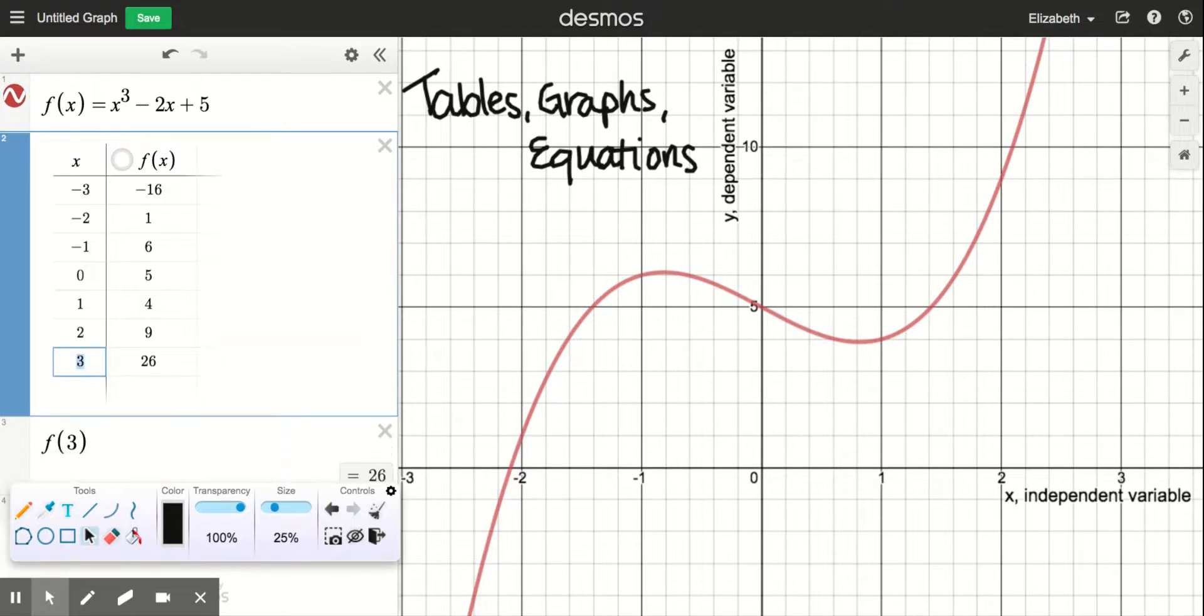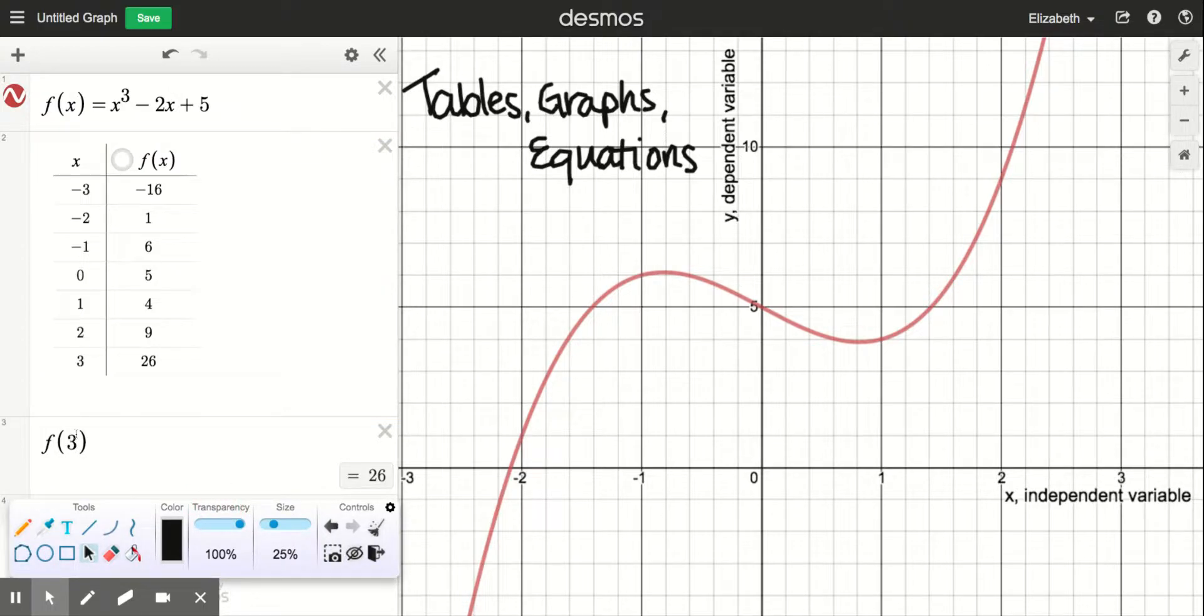A table is just a collection of previously chosen inputs and their corresponding outputs. We just often make them increase by one to look for patterns.